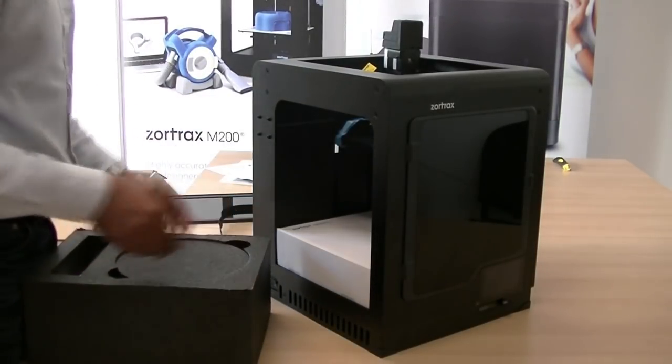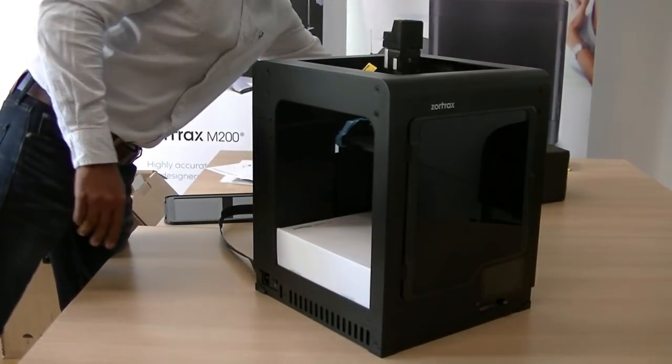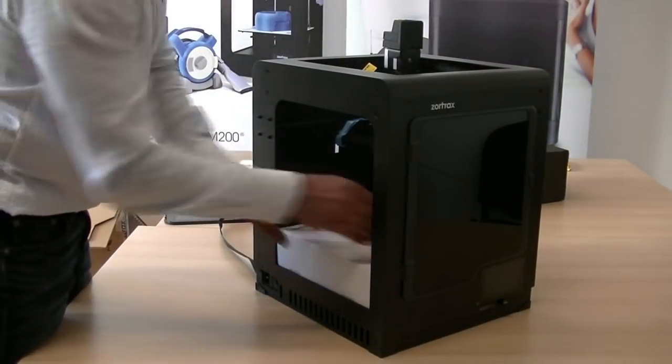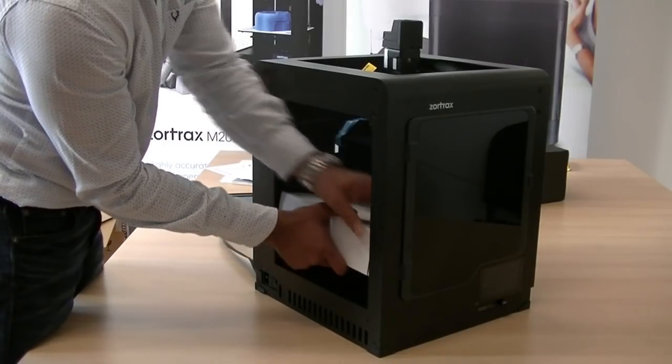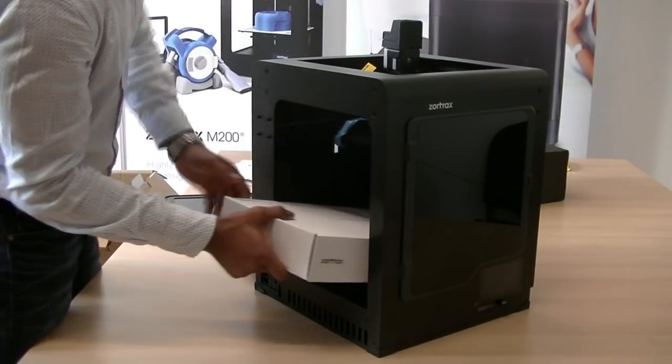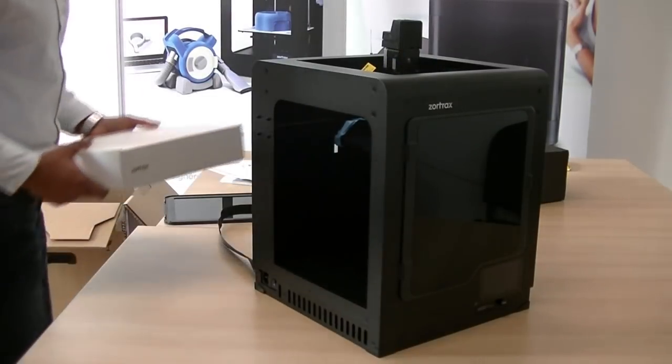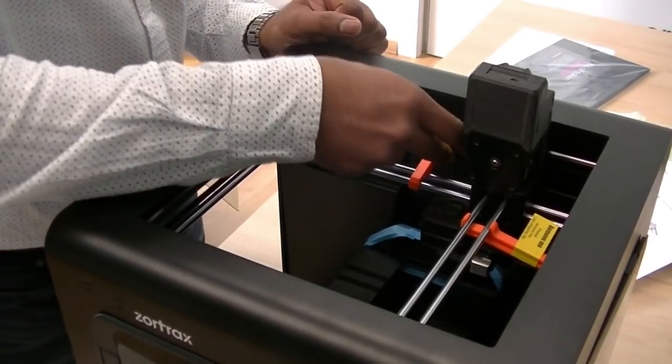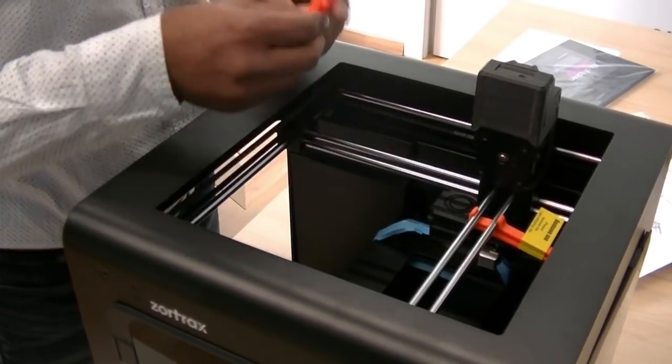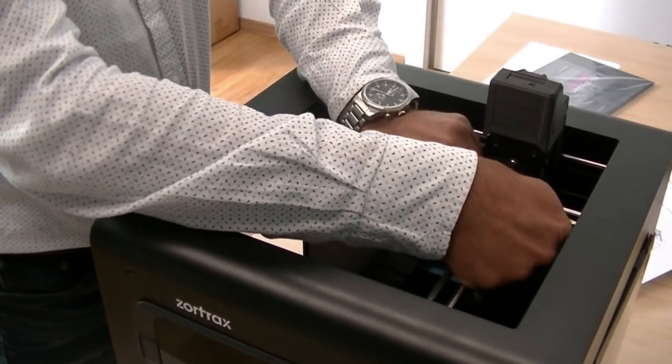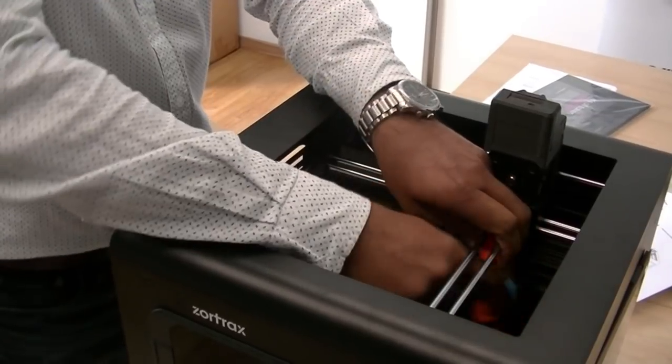Take out the filament which is inside and start the kit. We have to make sure these shipping clips need to be removed. That's two, one for X and one for Y.